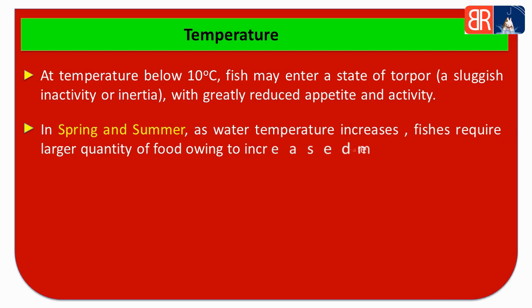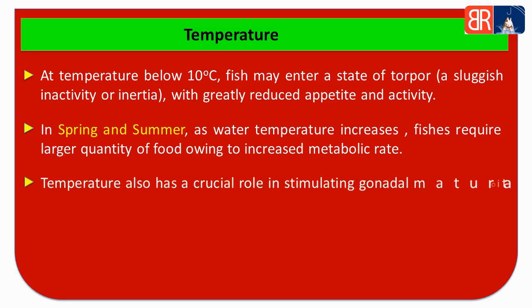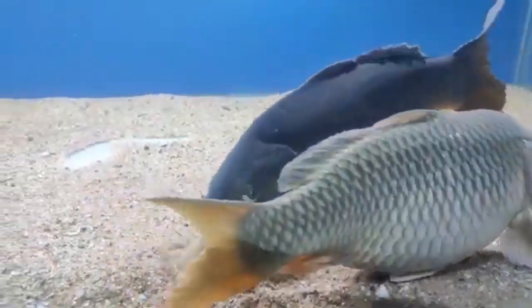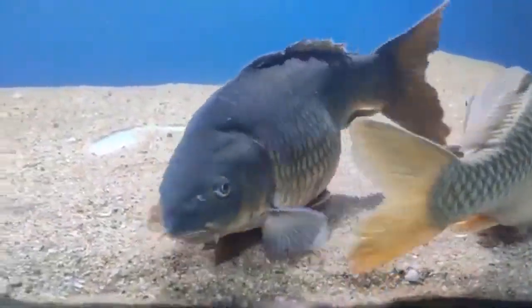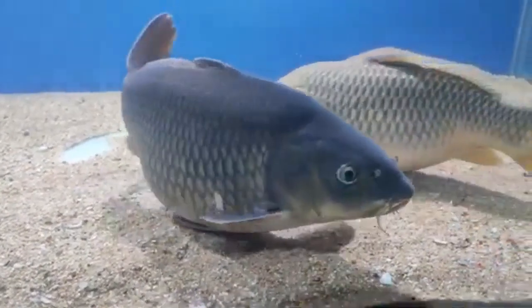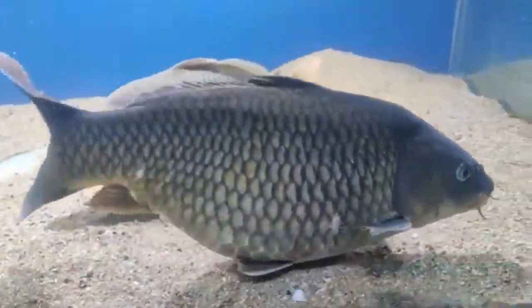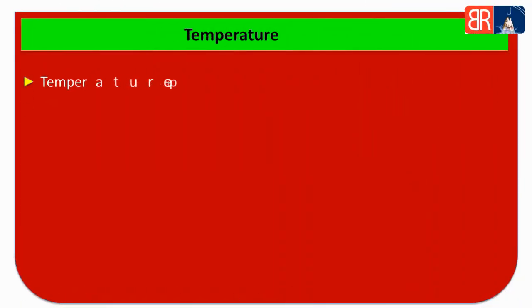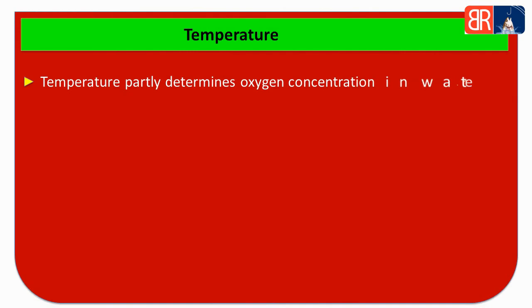In spring and summer seasons, as water temperature increases, fish require large quantities of food to increase their metabolic rate. Temperature also plays a crucial role in the gonadal maturation and spawning activity of carp fishes. Common carp fish are induced for breeding in hatcheries only when the water temperature is above 20 degree Celsius.